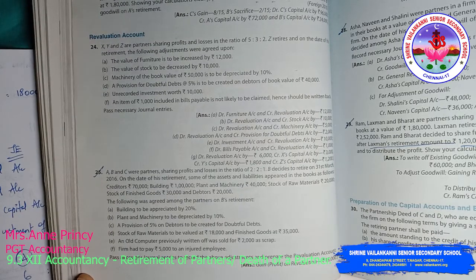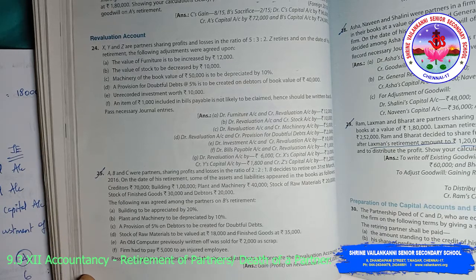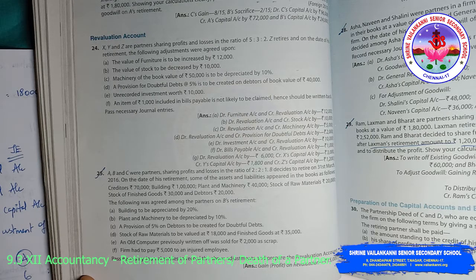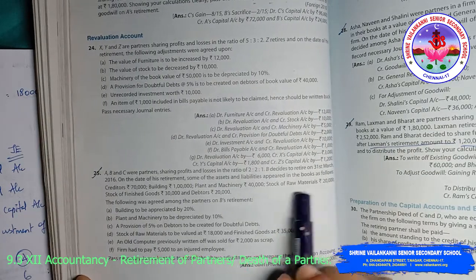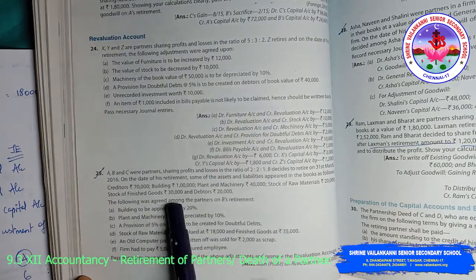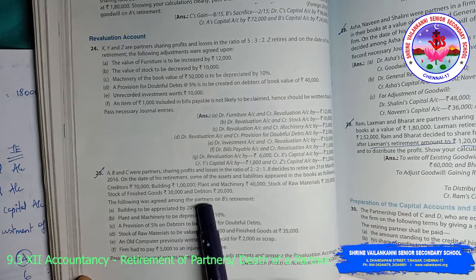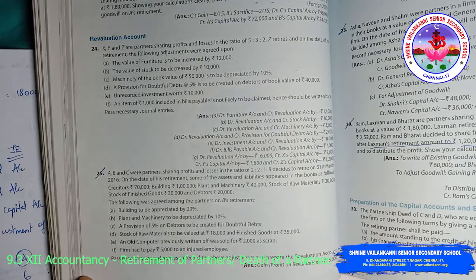The partners share profits in the ratio of 2:2:1. B decides to retire on 31st March 2016. On the date of his retirement, some of the assets and liabilities appeared in the books as follows: creditors 70,000; building 1 lakh; plant and machinery 40,000; stock of raw materials 20,000; stock of finished goods 30,000; debtors 20,000.